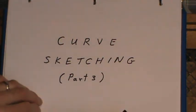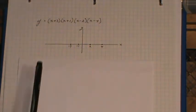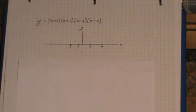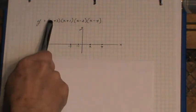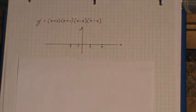In Curve Sketching Part 3, I'm looking at polynomials that are already factored and are of a higher order than 3. This is order 4. As you can see, x times x times x times x gives you x to the 4th.